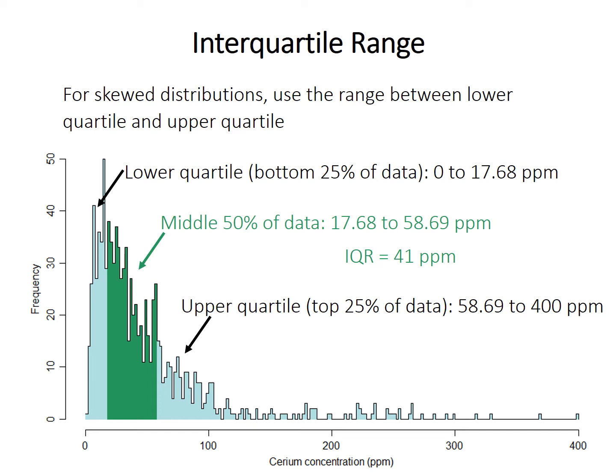So sometimes you see interquartile range given as the actual range, like 17.68 to 58.69. Sometimes you see it just as a single number, which is the difference between those two. You sometimes see those interchangeably, but in R, if you want to report one value for dispersion, you want to report just a single number there.